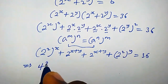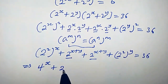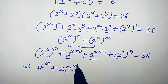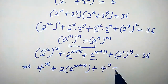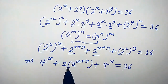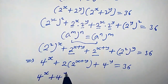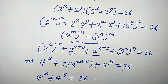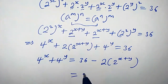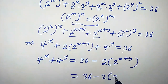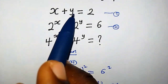This implies: 4 to the power of x, plus 2 to the power of x plus y, plus 2 to the power of x plus y, plus 4 to the power of y equals 36. So 4^x plus 4^y equals 36 minus 2 times 2 to the power of x plus y. Now, x plus y equals 2 from equation 1, so we substitute that in.